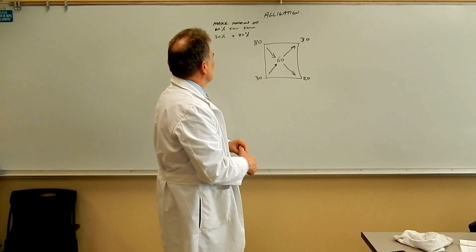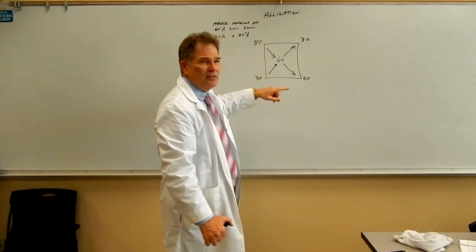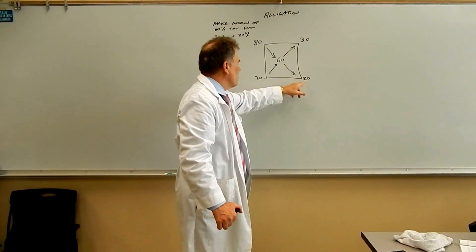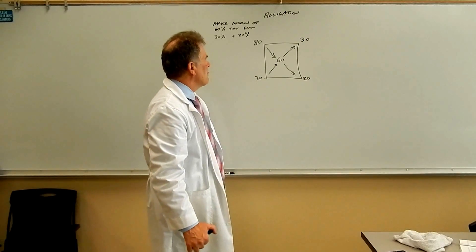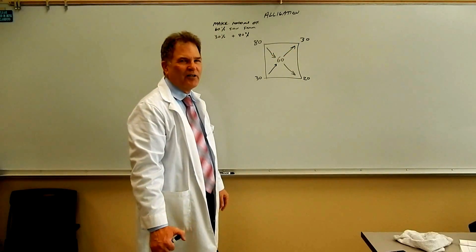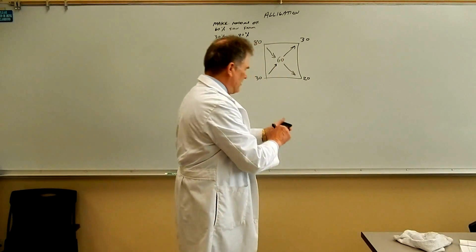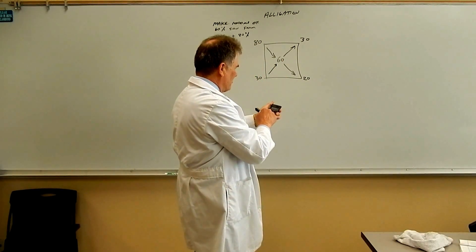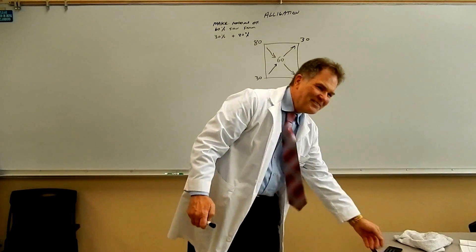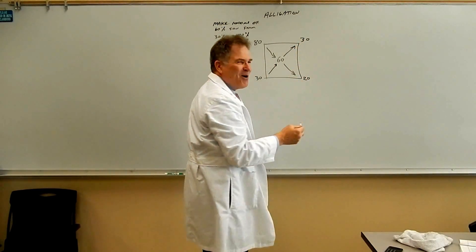What this means is that you're going to have 30 parts of the 80% and you're going to have 20 parts of the 30%. So if you have 30 parts and 20 parts, how many parts do you have all together? Let's see, what do we got here? We got 30 plus 20, right? 50. That was a joke. You have 50 parts all together.